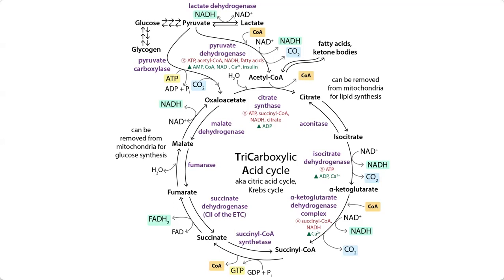It's not so big of a deal if you accidentally go the wrong way, because you just go back the other way once the concentrations change. However, think about a step with a really large negative delta G. This would mean that the products are much more stable than the reactants, making it really hard to reverse. Some examples of this are our citrate synthase step, our isocitrate dehydrogenase step, and our alpha-ketoglutarate dehydrogenase complex.